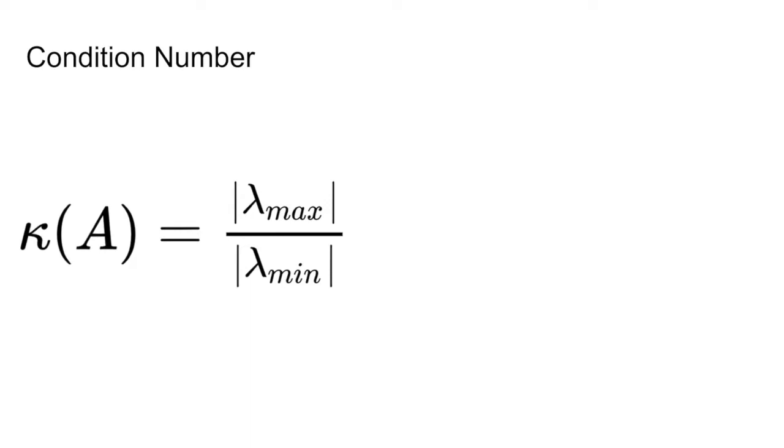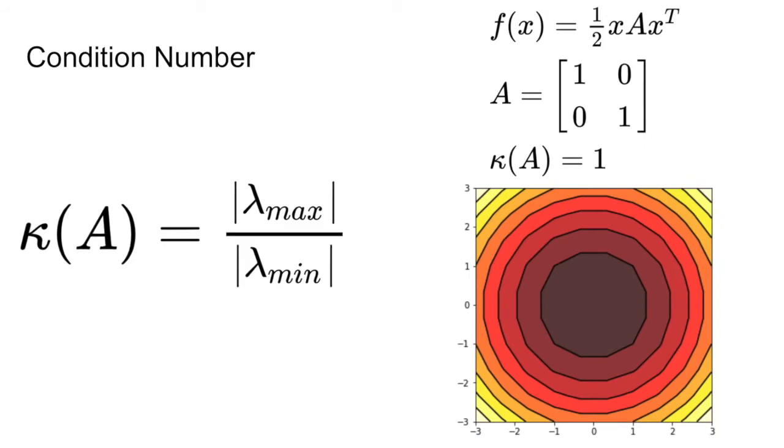Therefore, the condition number represents how oblong the contour graph of the matrix is. We can see some examples here. When we look at the identity matrix, this is the smallest that the condition number can ever get, because the max and min eigenvalues are the same. In the case of the identity matrix, we can see that the isocontour graphs are circular.